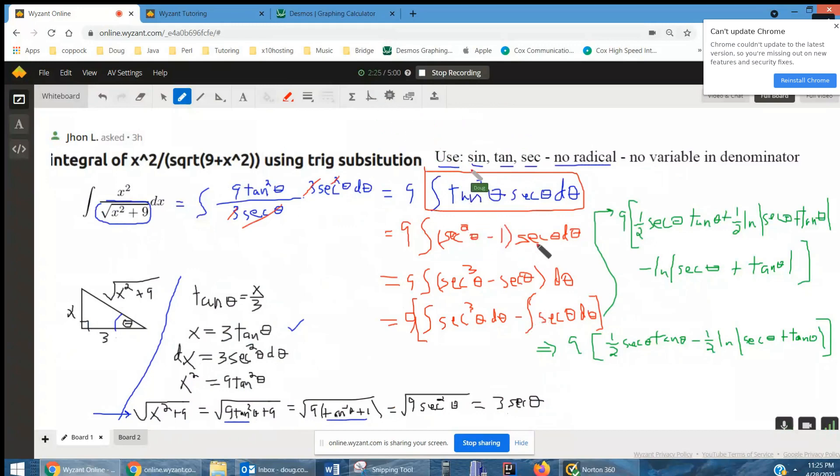On this screen, I've shown replacing tangent squared theta with secant squared theta minus 1. Then I'm going to distribute the secant of theta and break it apart into two antiderivatives.